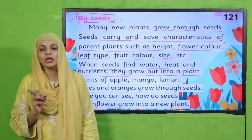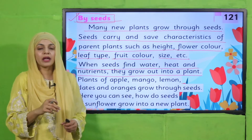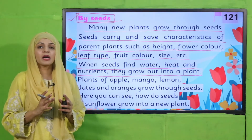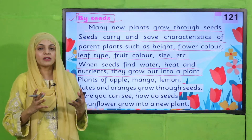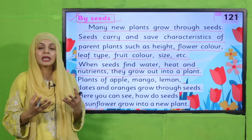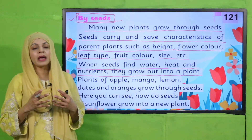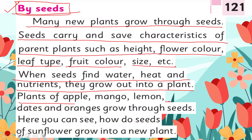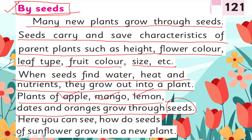Seeds grow out into a plant when you sow them in the soil and all the conditions necessary for growth are available. Plants of apple, mango, lemon, dates, and oranges all grow through seeds. These are examples of plants that grow from seeds.